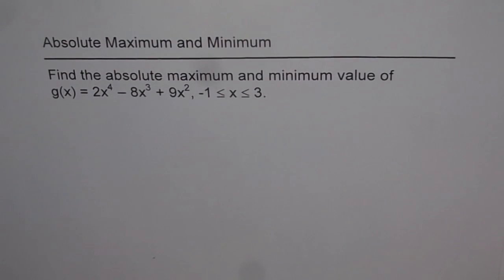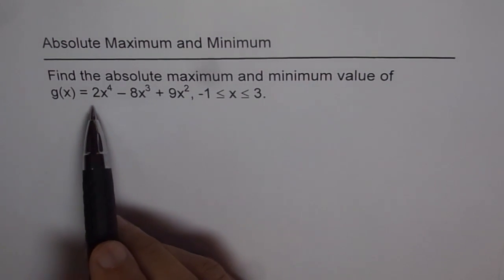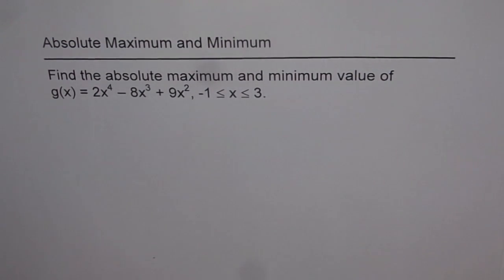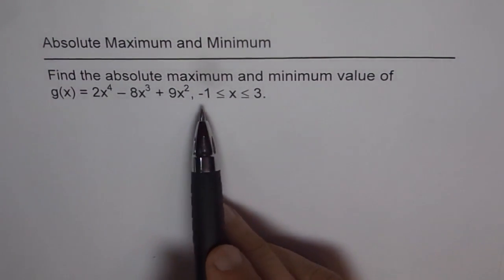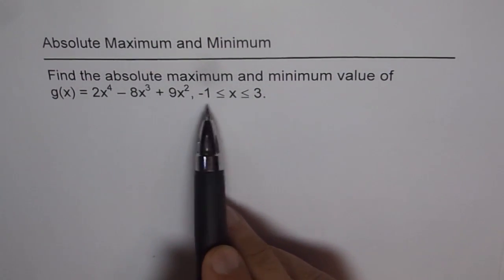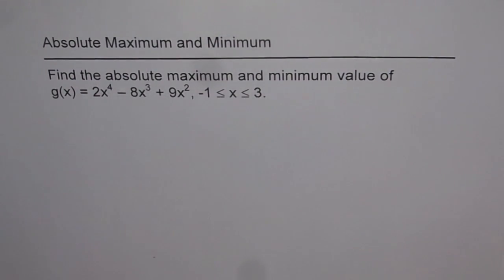Absolute maximum and minimum. Find the absolute maximum and minimum value of the function g(x) = 2x⁴ - 8x³ + 8x², where x is between -1 and 3 and both are included in this interval. Whenever you have a closed interval, there is a possibility of both absolute maximum and minimum.